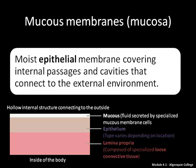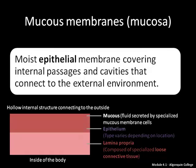The mucus membranes, or mucosa, are moist epithelial membranes covering internal passages and cavities that connect to the external environment. All mucus membranes are covered in a fluid secreted by specialized mucus membrane cells. This fluid is called mucus. The epithelium is the tissue that secretes the mucus, and the type of epithelium found depends on the location of the mucus membrane. Underneath the epithelium is the lamina propria, which is composed of specialized loose connective tissue.